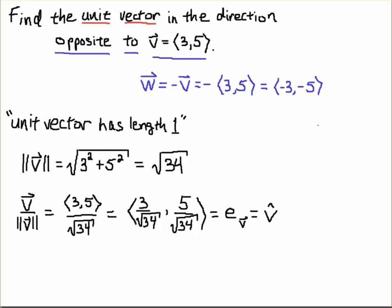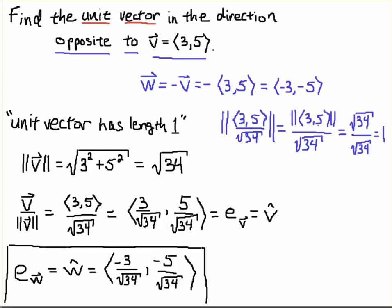To finish the problem of course you just change the direction so e sub w or w hat would just have components 3 over root 34 comma 5 over root 34 but then you just change the sign so you have minus 3 over root 34 comma minus 5 over root 34. So this is the completion of the problem and this is your answer.